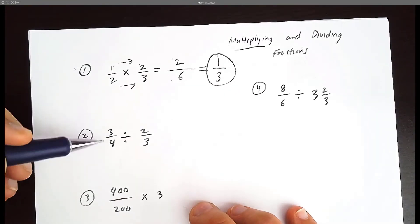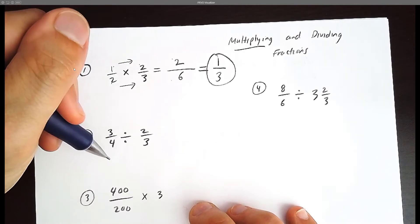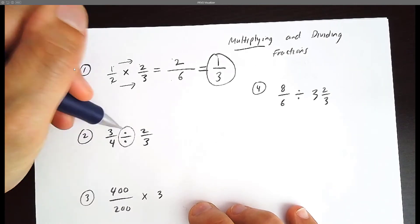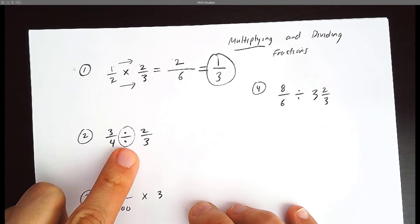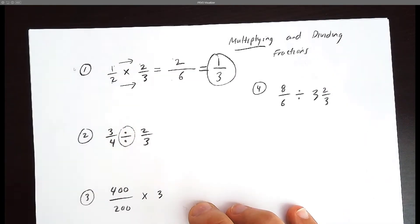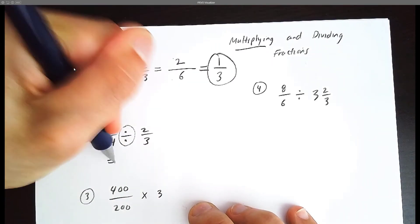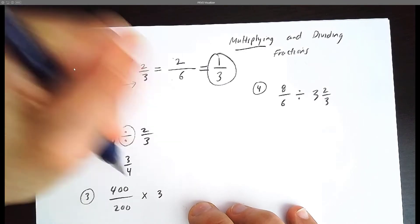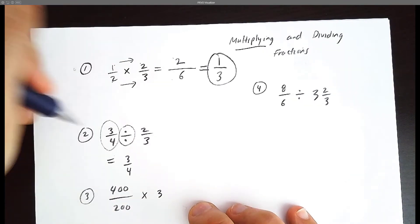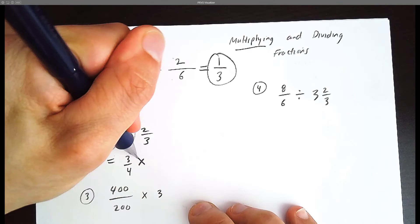Now dividing fractions is pretty similar. All you have to do is one extra step. We're going to change the division symbol to a multiplication symbol. So we have 3/4. The left number stays the same. Multiply by the flip.